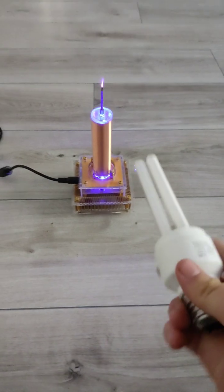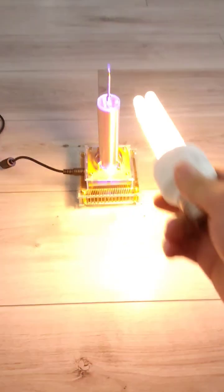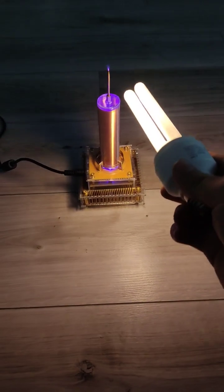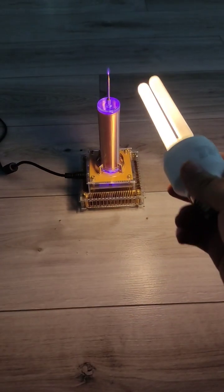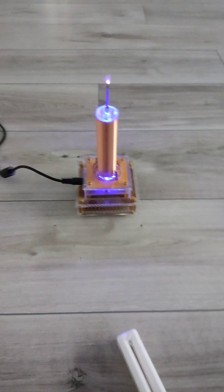We know that if you take a CFL and bring it near a Tesla coil, it will begin to light up because the gases are being excited in the fluorescent tube or CFL.